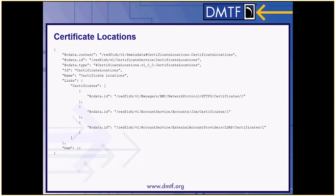For Certificate Locations, an example resource shows that it contains a links object with a certificates array showing all certificates managed by the service. In this case, there are three certificates: one for the HTTPS service for a BMC, one for an account named Jim, and one for the LDAP service.